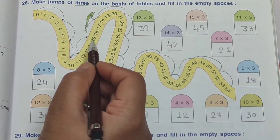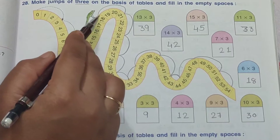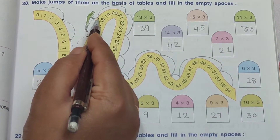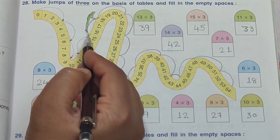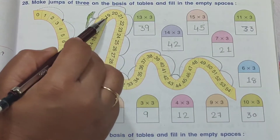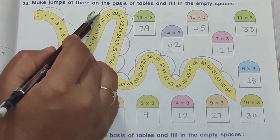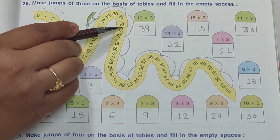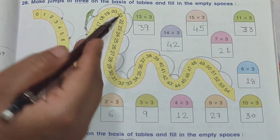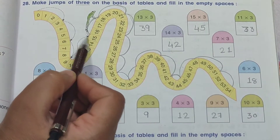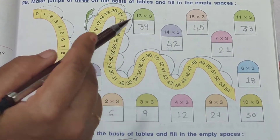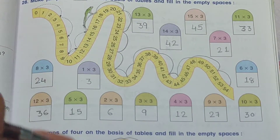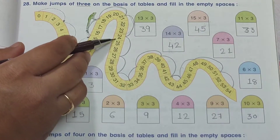From 15: count 1, 2, 3 — land on 18. 3 sixes are 18. So you have to make this round. Like this, you have to make the arcs. From 19: count 1, 2, 3 — land on 21. From 22: count 1, 2, 3 — land on 24. See — 3 fives are 15, 3 sixes are 18, 3 sevens are 21. So here tables are also used and you have to count 3 as well. Now, where were we? At 24.